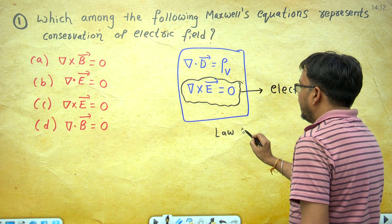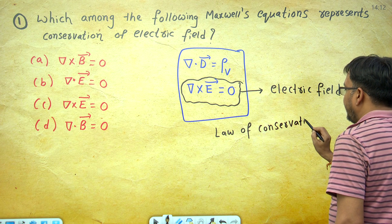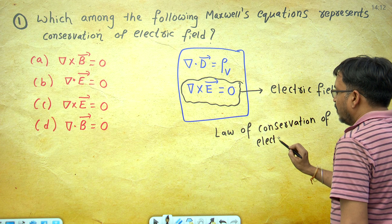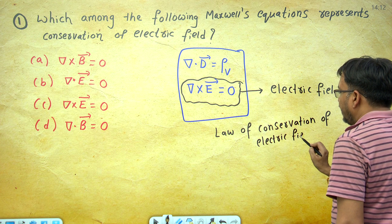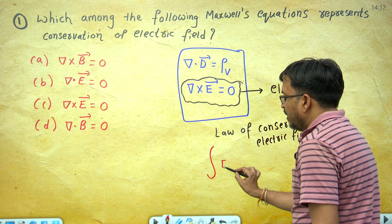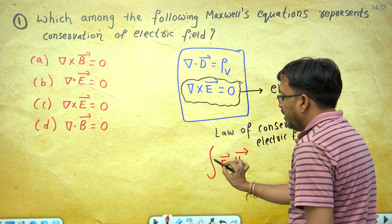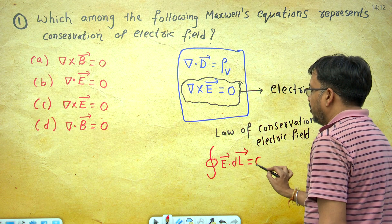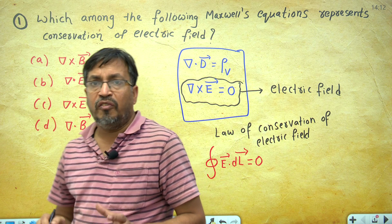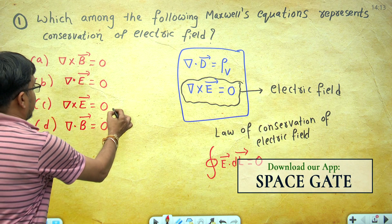That equation is derived from the law of conservation of electric field. What is the law of conservation of electric field? It states that the line integral of electric field intensity around a closed path — the closed loop integral of E dot dL — is always equal to 0. So the answer to this question is curl E equals 0, option C is correct.